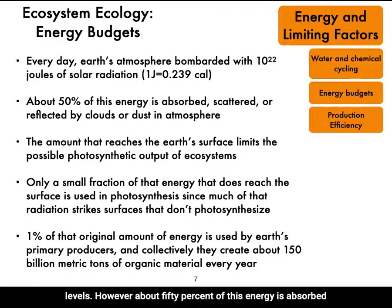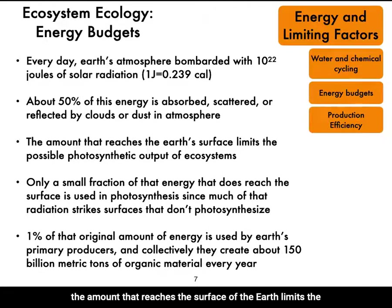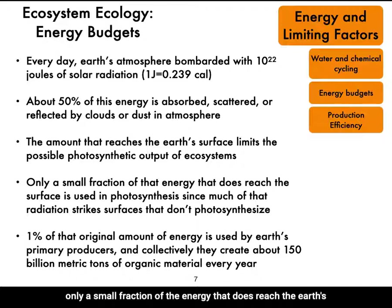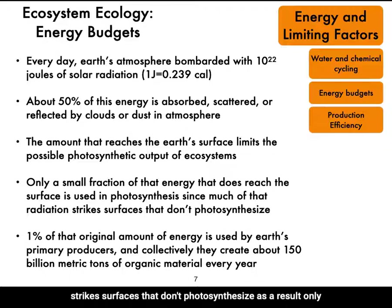However, about 50% of this energy is absorbed, scattered, or reflected by clouds or dust in the atmosphere. The amount that reaches the surface of the Earth limits the possible photosynthetic output of ecosystems. On top of that, only a small fraction of the energy that does reach the Earth's surface is used in photosynthesis, since much of that radiation strikes surfaces that don't photosynthesize.